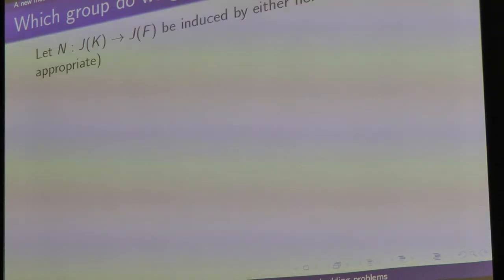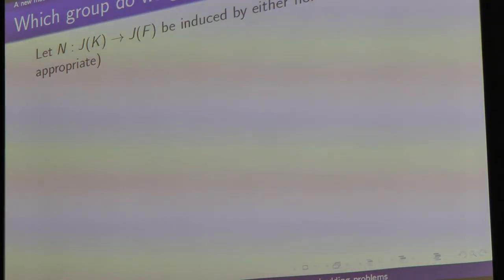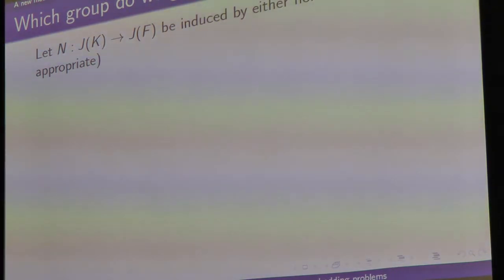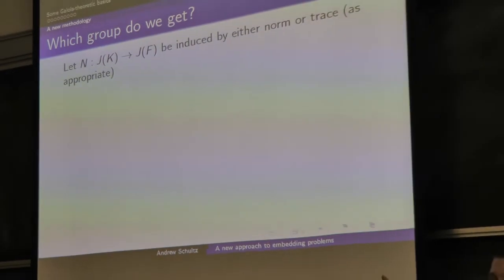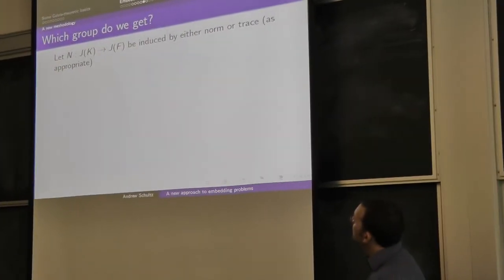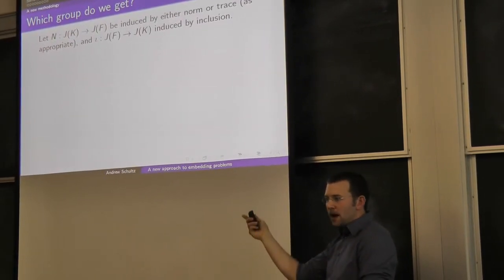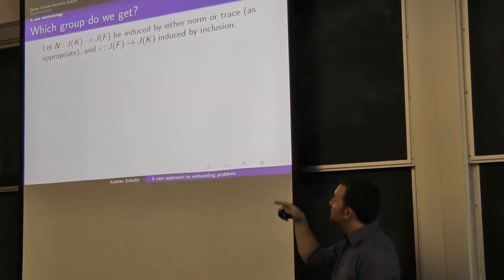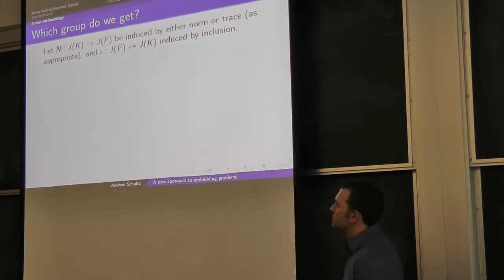Now we know what all the extensions look like. The next question is: how do I know which of those groups my Galois group is? We have J of K and J of F. In the Kummer theory setting, p-power classes of K map naturally down to p-power classes of F by the norm map — I call that N. There's also a natural map from p-power classes of F into p-power classes of K coming from the inclusion of F in K.